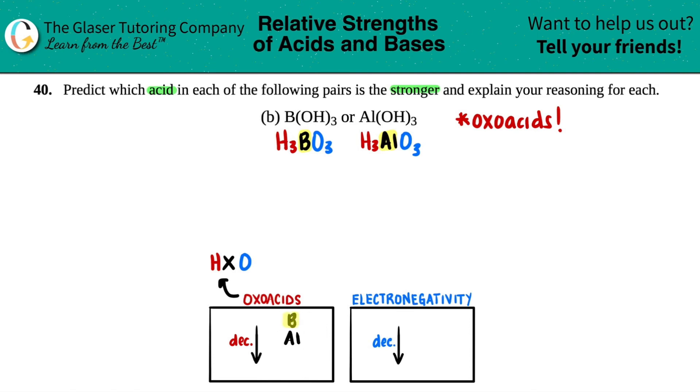So basically boron will win, which means that this acid, H3BO3, or if you just want to write it as B(OH)3, that is the stronger acid.